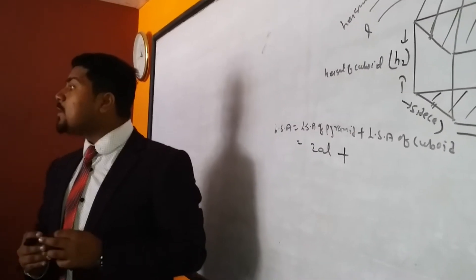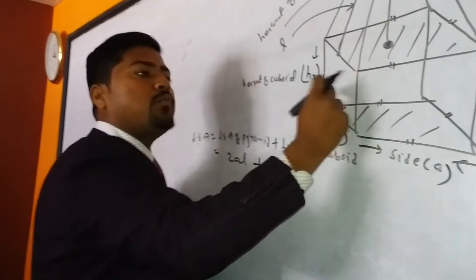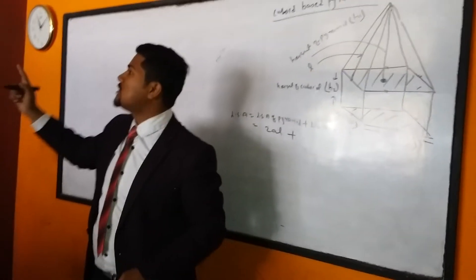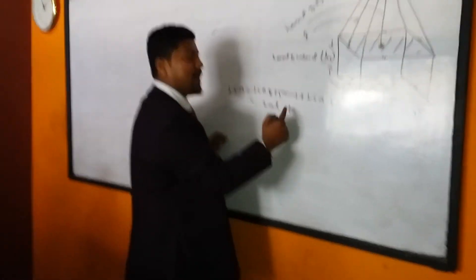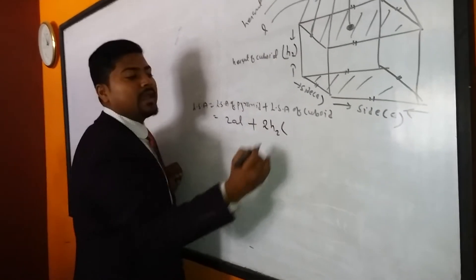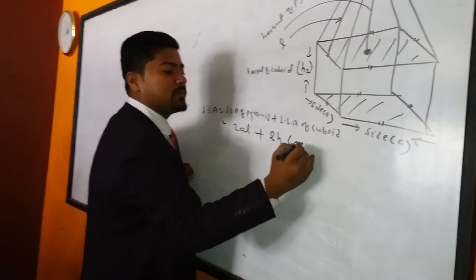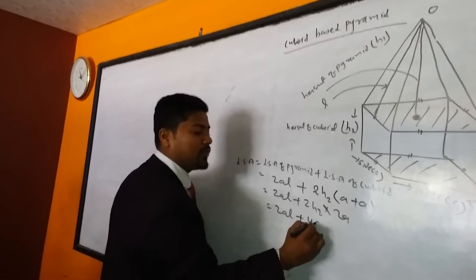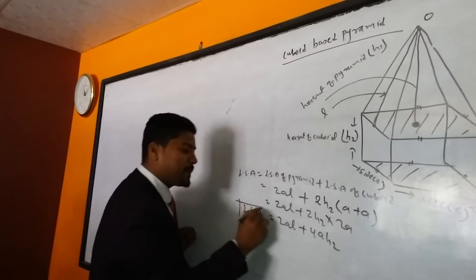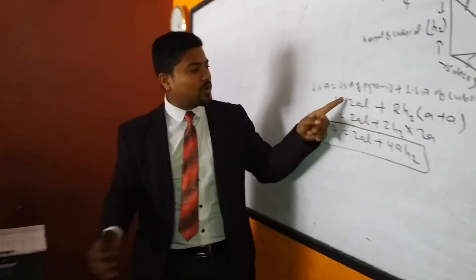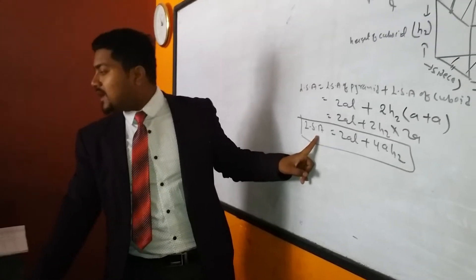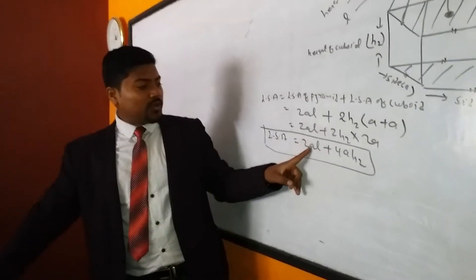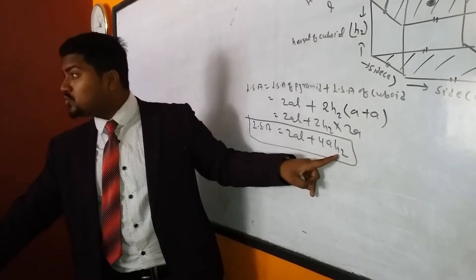For LSA of cuboid, we do not include the top or bottom faces — only the four walls remain. The formula for LSA of cuboid is 2(l + b) × height. Since l = a and b = a, this gives 2(a + a) × S2 = 4aS2. So the combined LSA = 2aL + 4aS2. Remember this formula.